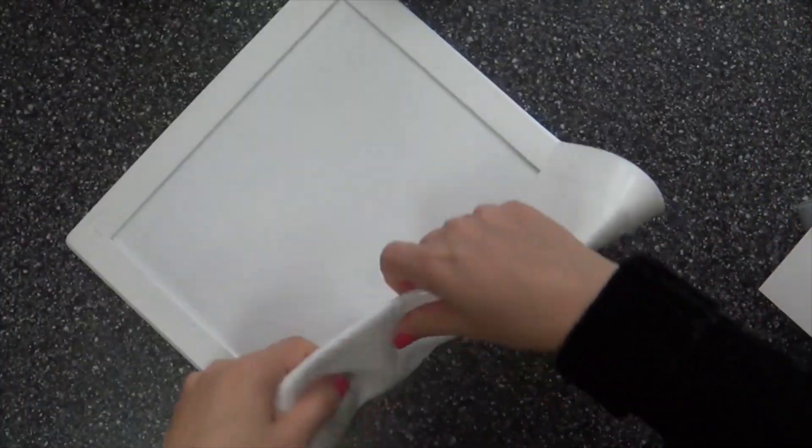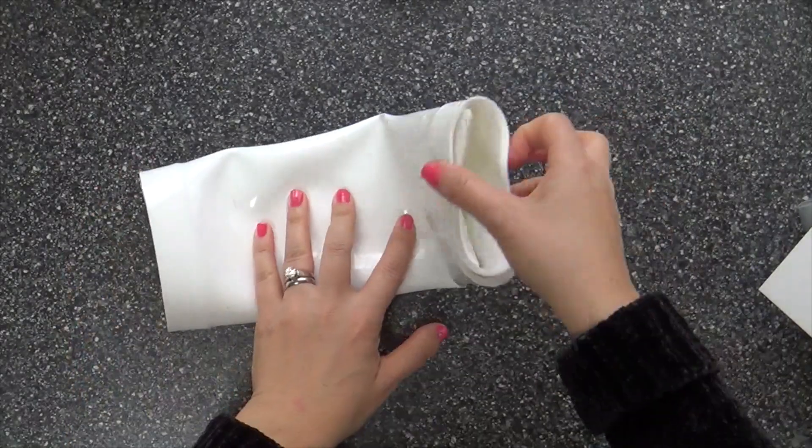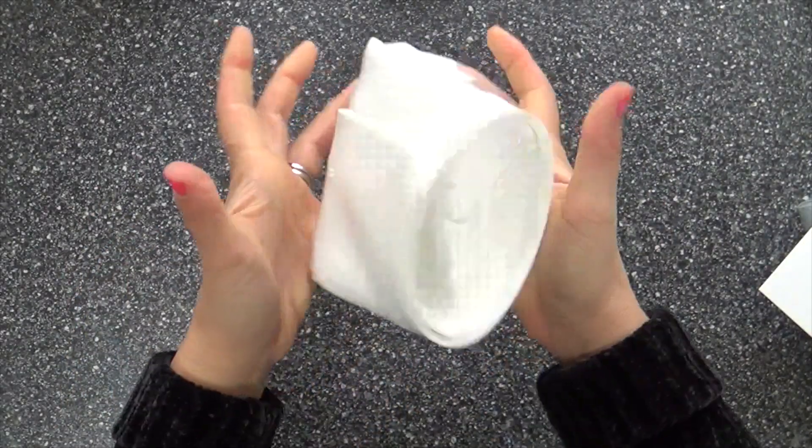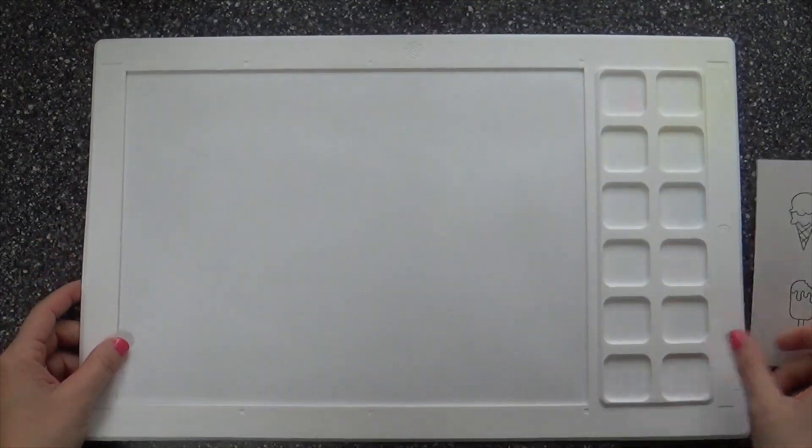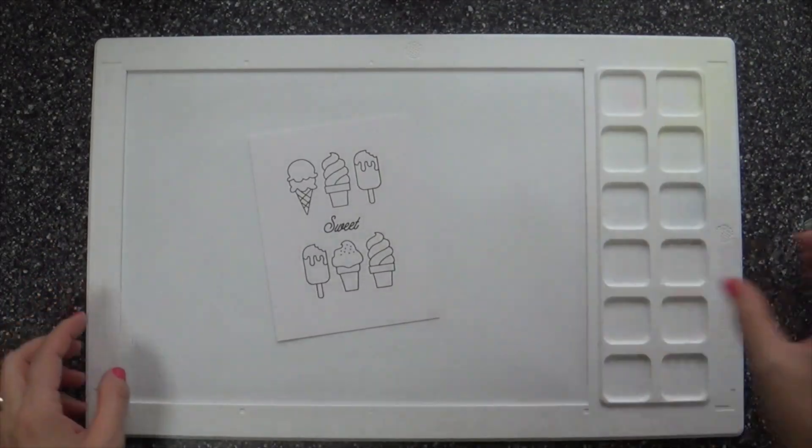Now here's the star of the show, the water media mat. Look at how I fold this puppy up. You can crinkle it, I've packed it in a suitcase, and when you take it out it's like new. I love it.